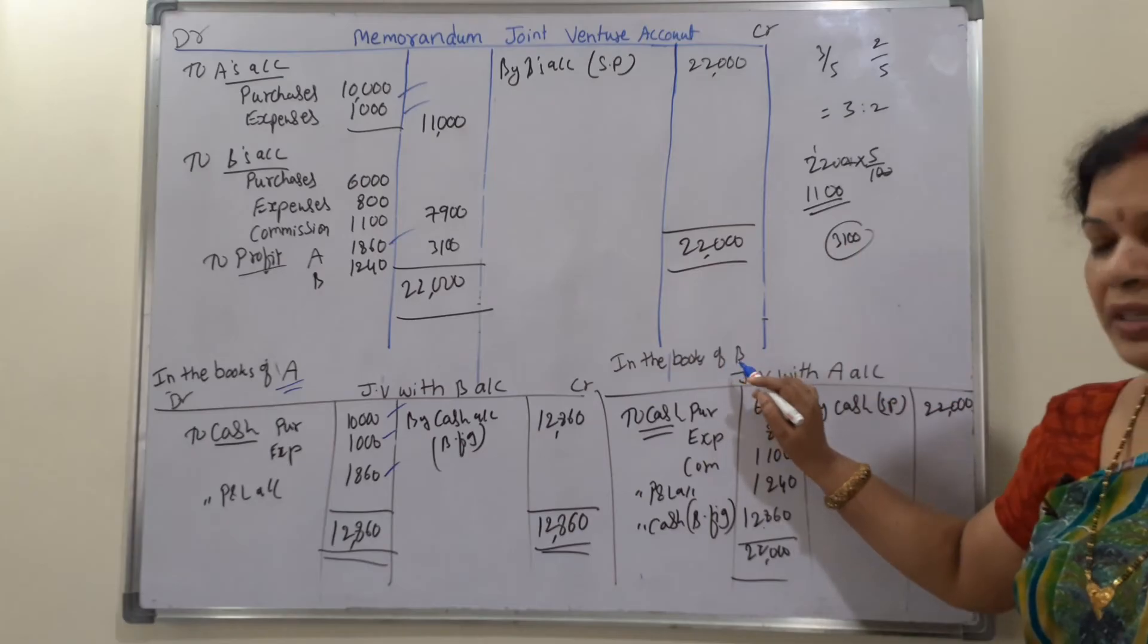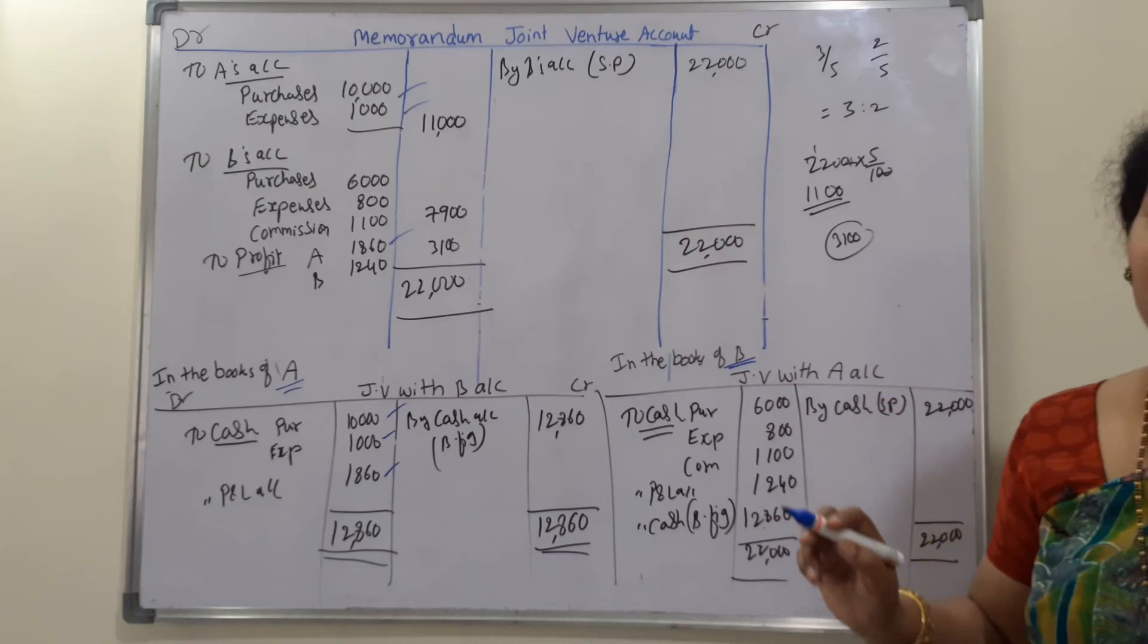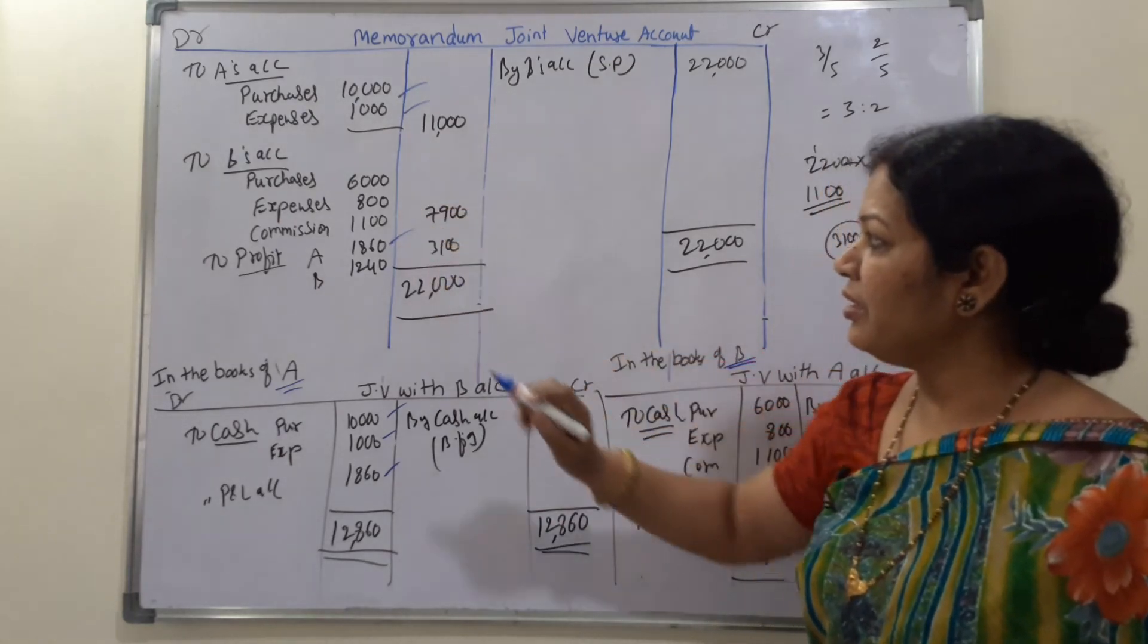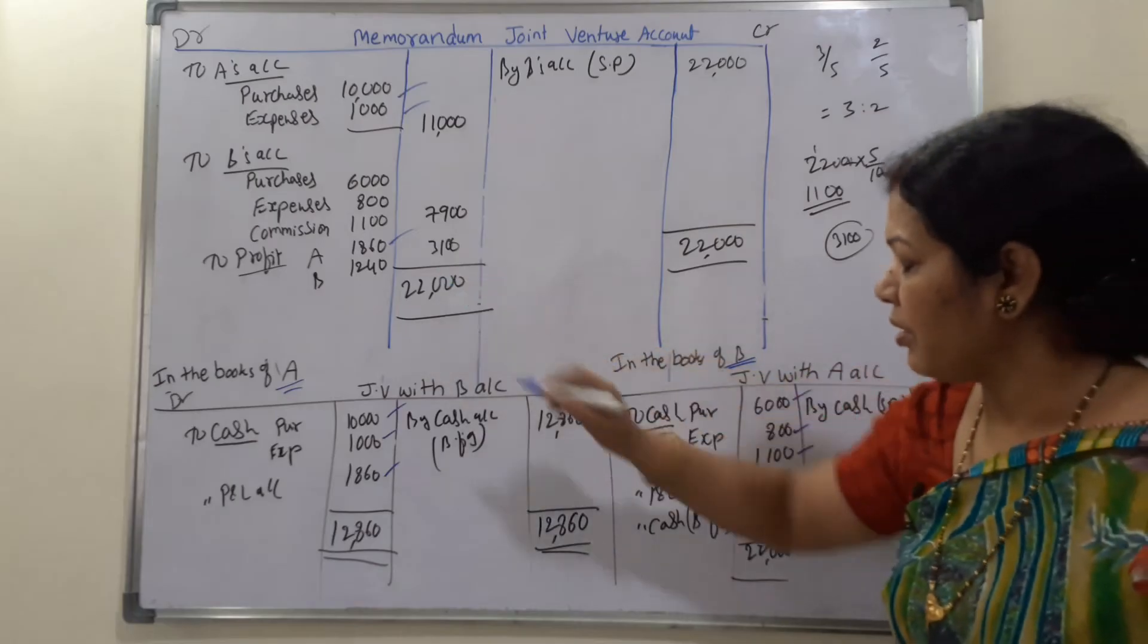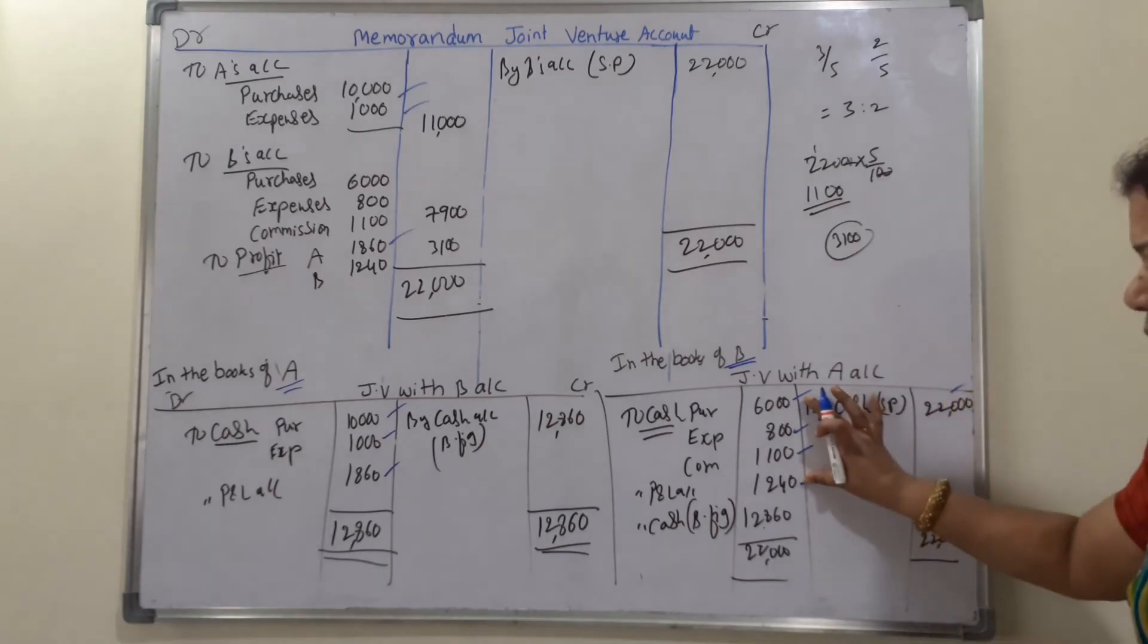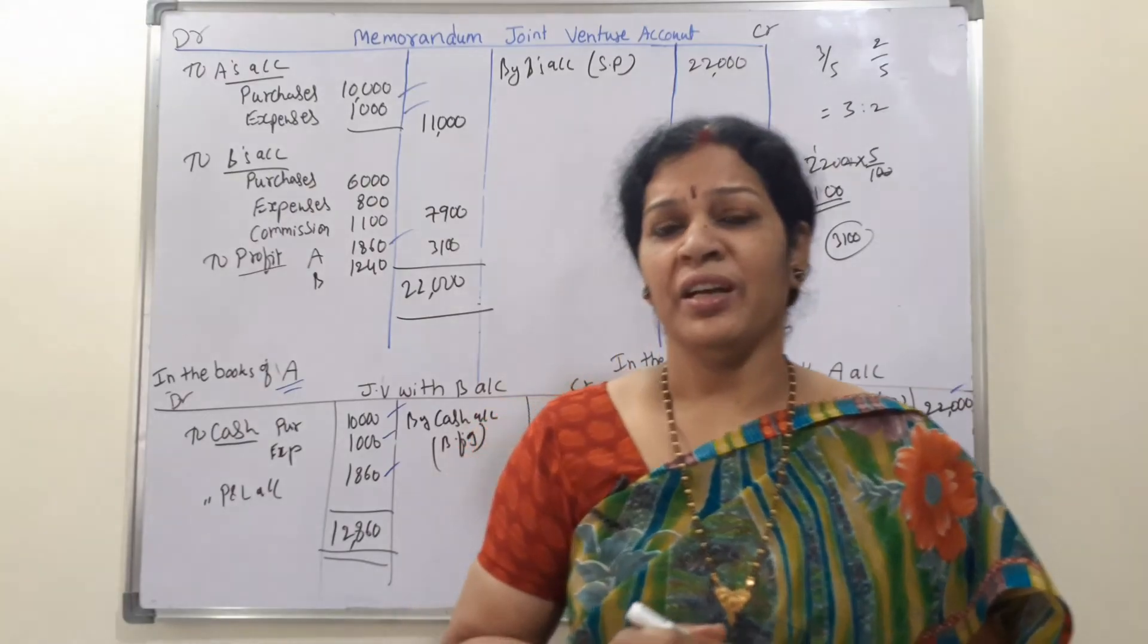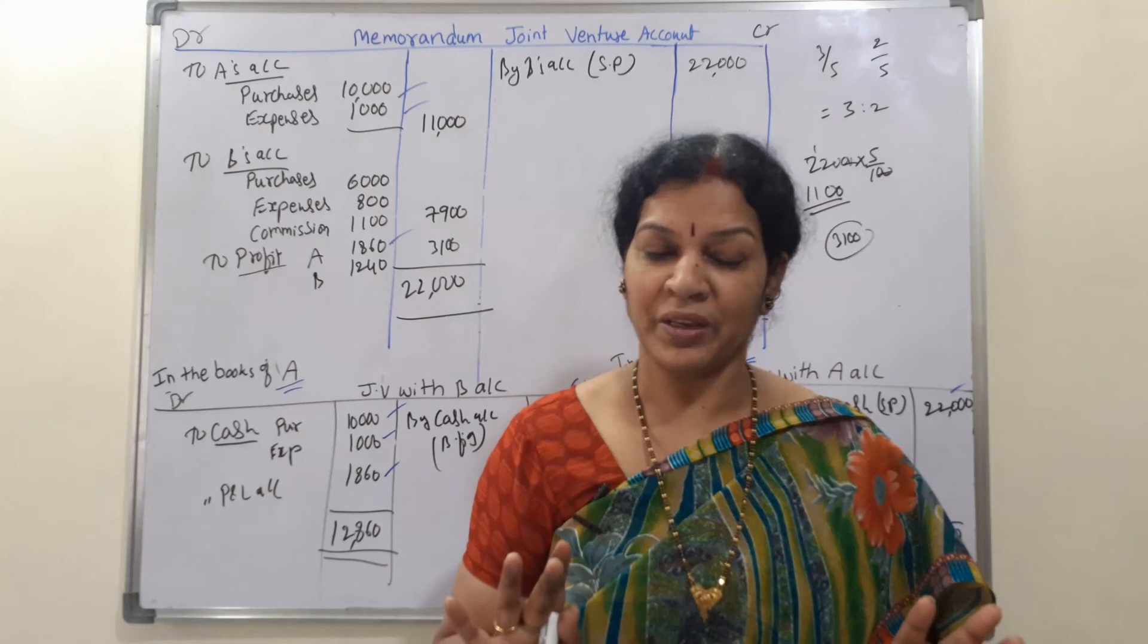In the same way, in the books of B means B's transactions we are writing, joint venture with A's account. So now B's are here: 6,800, and 1,100 commission, and profit and loss of 1,240. And also there is a sales of B, 22,000. And 22,000 minus these four items, you got cash of this much. So this is balancing figure. Simple problem. Memorandum joint venture is easy. More or less a little bit transactions you may find it, but procedure is same. Are you getting it? Completed joint venture.